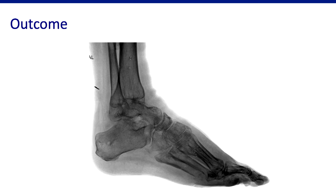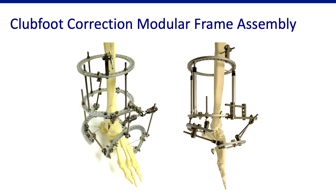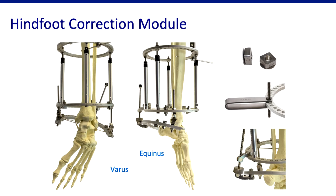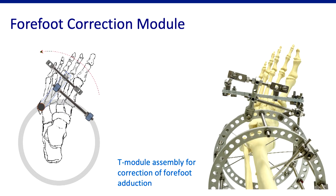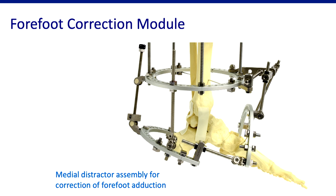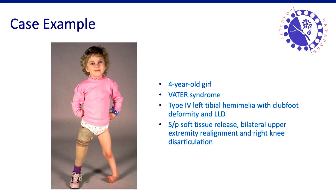Pediatric surgeons will also see this approach in clubfoot correction. When correcting clubfoot in small children using external fixator, there is no room to put a hexapod, but there is enough room to build hinges and use them in an unconstrained manner, because we are going to stretch soft tissues to correct deformity. You can see many hinges in these diagrams — hinges to correct varus and equinus, to correct supination and pronation, to correct adduction. But none of them are rotation hinges in the traditional sense. They're all unconstrained hinges — just to pull and push parts of the foot in different directions.